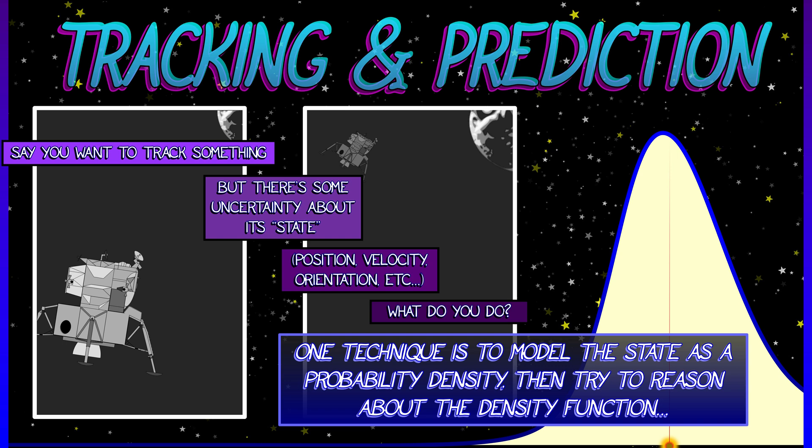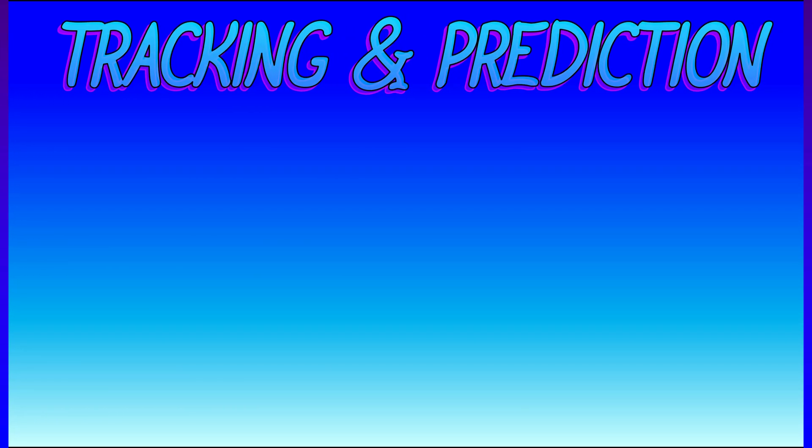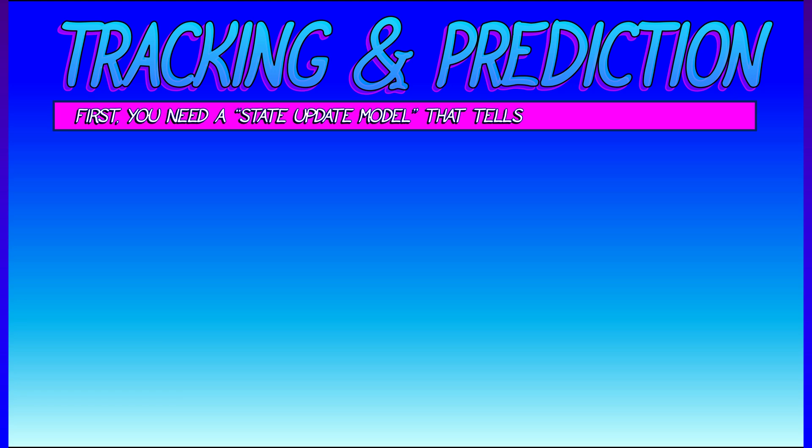This gets a bit technical. Stick with me here. The first thing that we need to do if we want to start doing tracking and prediction, which is so important in things like self-driving vehicles, aeronautics, anything like that, the first thing that we want to do is to come up with a state update model that tells you how things change from one time step to the next.